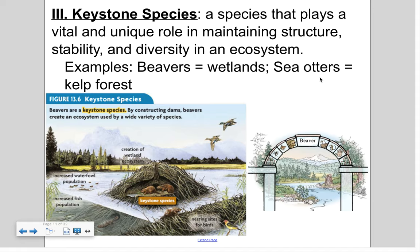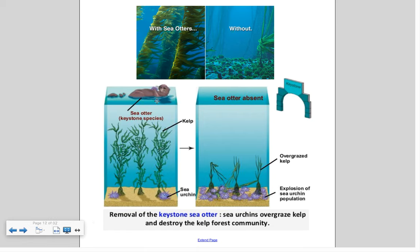Sea otters create the kelp forest. Sea otters eat sea urchins, and sea urchins eat kelp. Without sea otters, the sea urchin population explodes exponentially and they overgraze all the kelp. Without kelp, you lose this underwater forest ecosystem where animals live and thrive. Sea otters keep the sea urchin population in check so the kelp can thrive and provide homes to many other species — another great example of a keystone species.